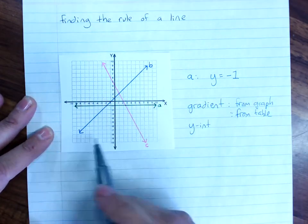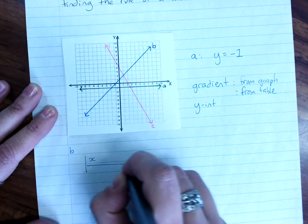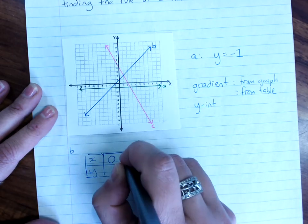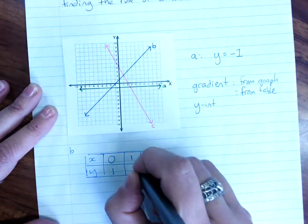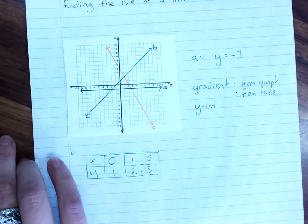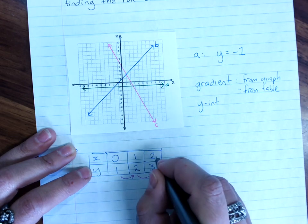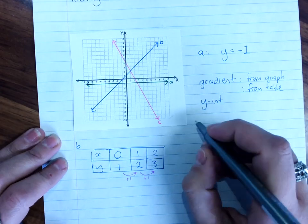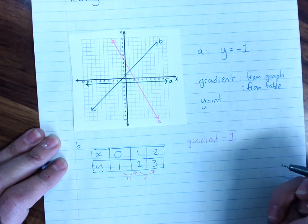And sometimes the easiest way is to make a table of values for the graph. So for graph B, x and y, when x is 0, y is 1. When x is 1, y is 2. When x is 2, y is 3. The gradient is the pattern in y. When x goes up by 1, the pattern in y plus 1 plus 1 gives me the gradient. So the gradient is 1 for B.